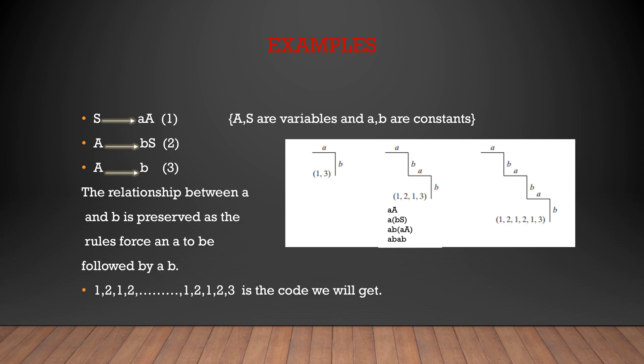Similarly, we will get the code 1, 2, 1, 2, 1, 3 for the next figure. Whatever the pattern, the first element will always be 1, followed by 2, then 1, and the last element will always be 3. So the general pattern will be 1, 2, 1, 2, and so on, ending with 1, 2, 3.